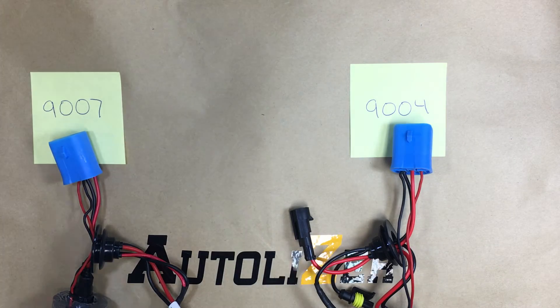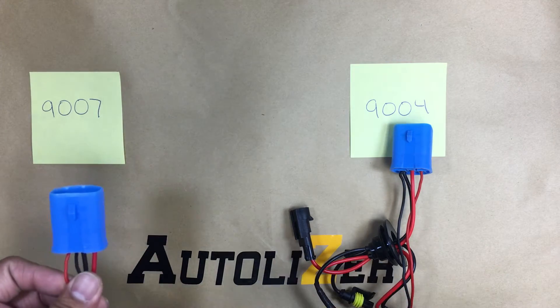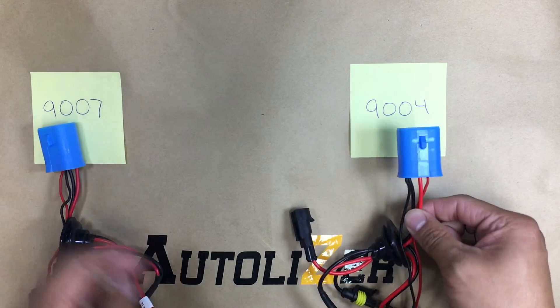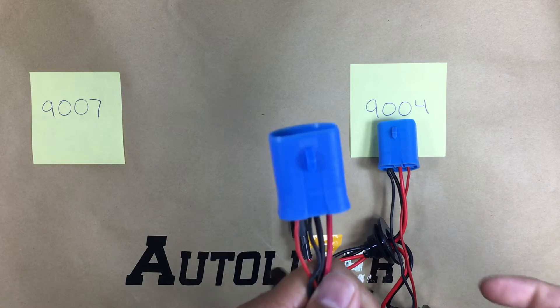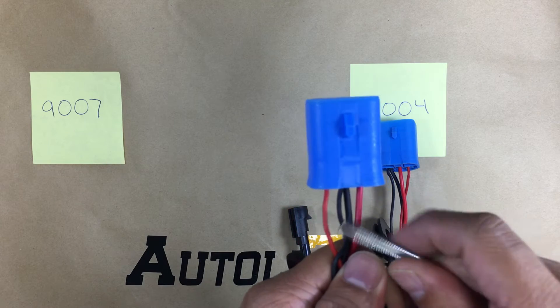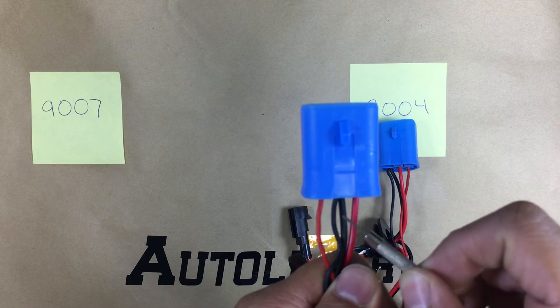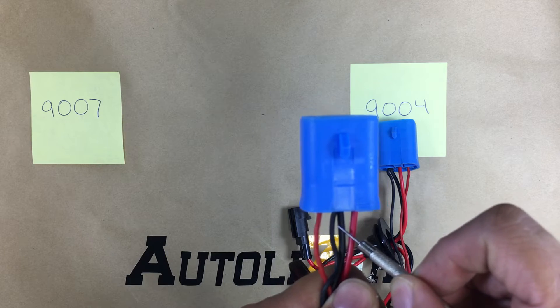What's up, today I will be showing you how to repin a 9007 plug to a 9004. First off, the 9007 - we look at it, it's gonna be the high beam right here, the thin red wire, the ground wire which is a black one, and then the low beam.